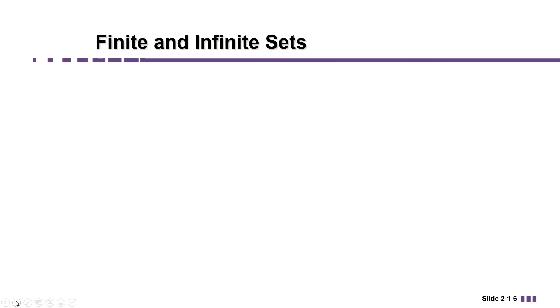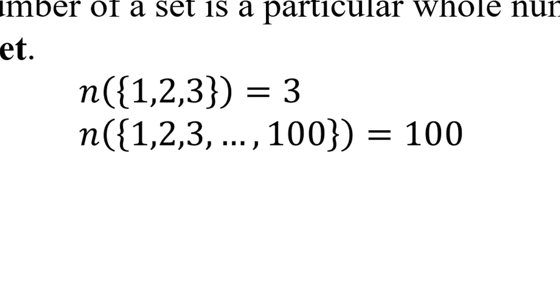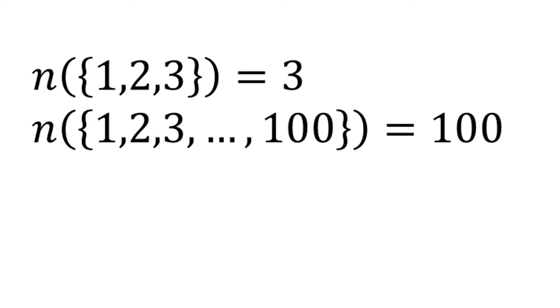Now some sets are finite and some sets are infinite. If the cardinal number of a set is a particular whole number, we call that set a finite set. So sets like one, two, three, which has three elements, that's a finite set.